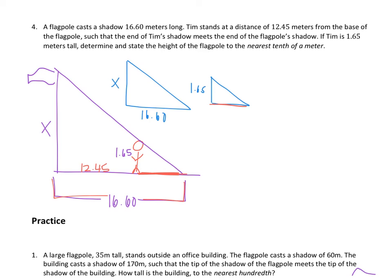So step 1, 16.60 minus 12.45. Go ahead and type that in on your calculator. So we end up with 4.15 and I'm just going to carry that over onto both of my pictures.